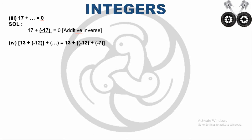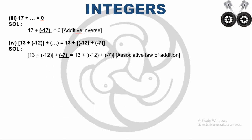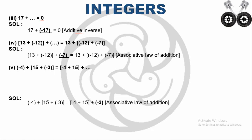The next statement: 13 plus minus 12 plus dash equals 13 plus bracket minus 12 plus minus 7. The brackets are interchanged, so the property used is the associative property, and the blank value is -7. Similarly, the last statement: minus 4 plus 15 plus minus 3 equals minus 4 plus bracket 15 plus dash. Again the brackets are interchanged, so the associative property applies and the blank value is -3.